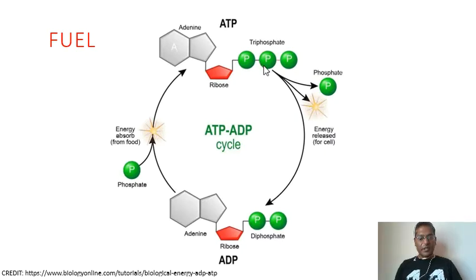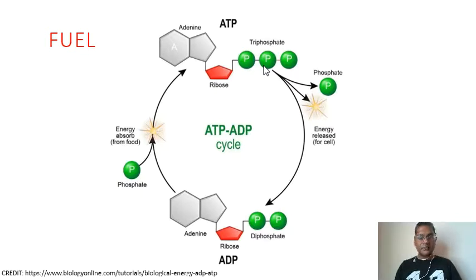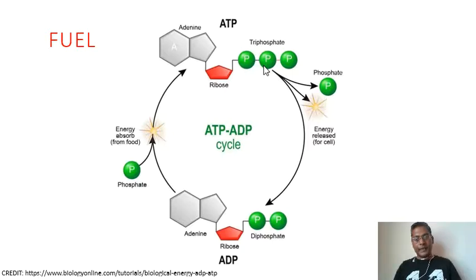If a substance must move into the cell against its concentration gradient — that is, if the concentration of the substance inside the cell must be greater than its concentration in the extracellular fluid — the cell must use energy to move the substance. As molecules are moving against their concentration gradient, active transport cannot occur without assistance.